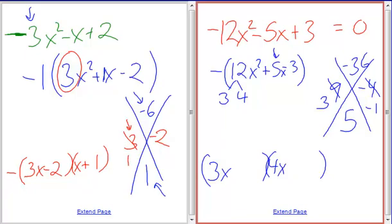So, how do I set these up? How do I fill these in? 3x minus 1. 4x plus 3. Plus 3. Very good. And then do I have a negative out here? Yes. Yes.